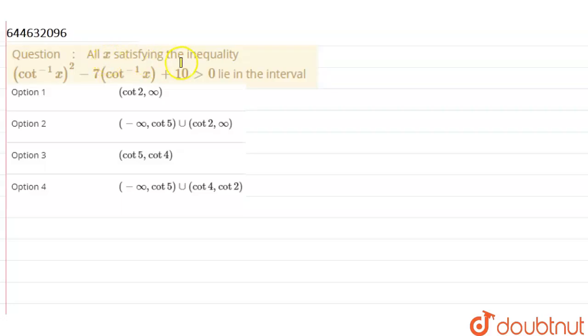Hello guys, so the question is: all x satisfying the inequality (cot⁻¹x)² - 7(cot⁻¹x) + 10 is strictly positive. So we have to find the solution for this given inequality.